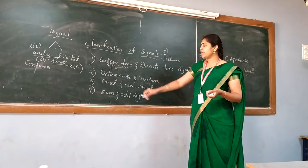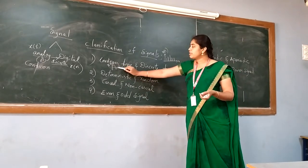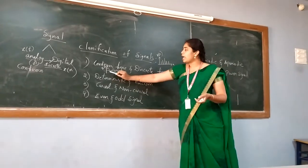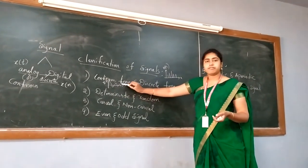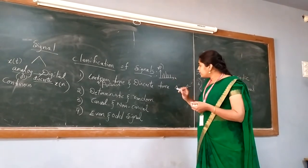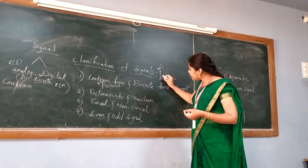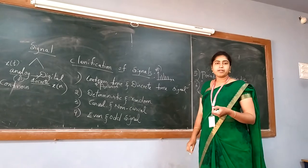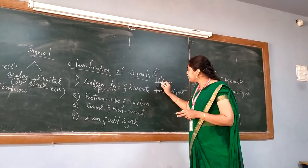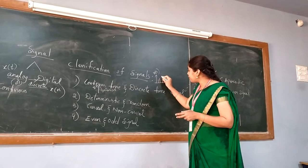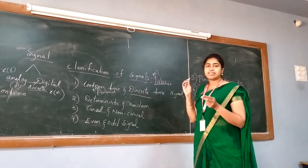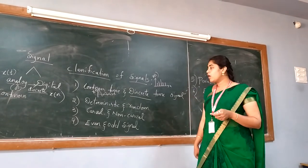In terms of definition: continuous time signal will vary with respect to time — with every instant of time the amplitude of the signal will vary. But when coming to the discrete type of signal, the amplitude of the signal can only be indicated at particular instants of time. That is why it is named as discrete. Discrete means distinct or particular time.